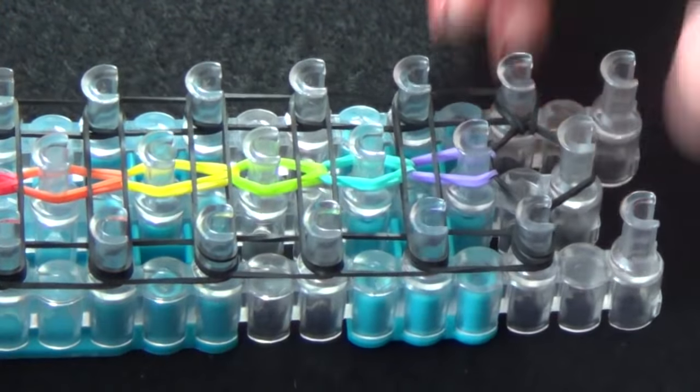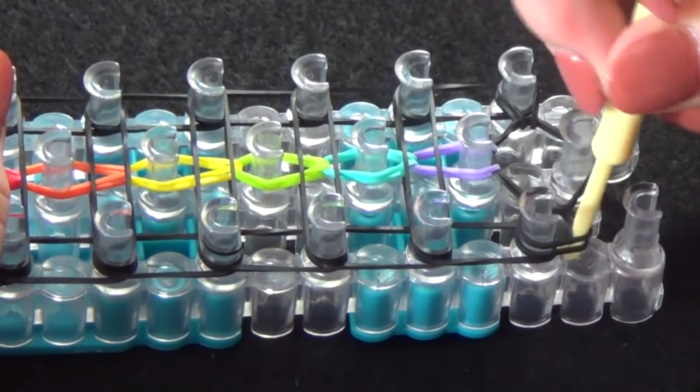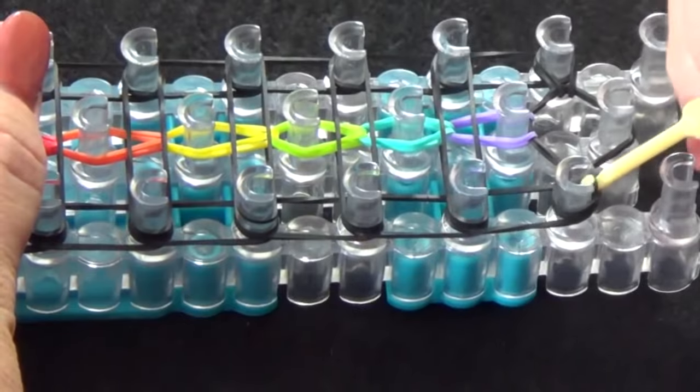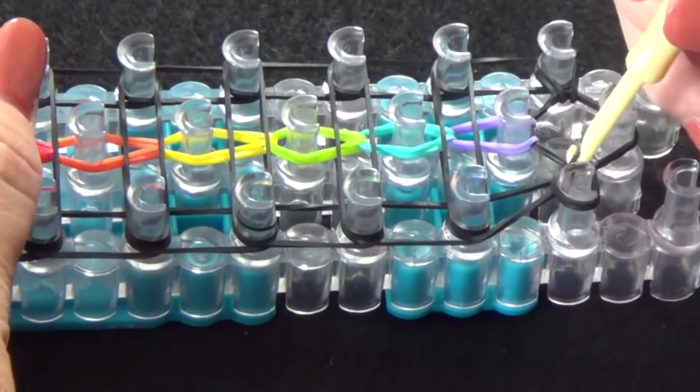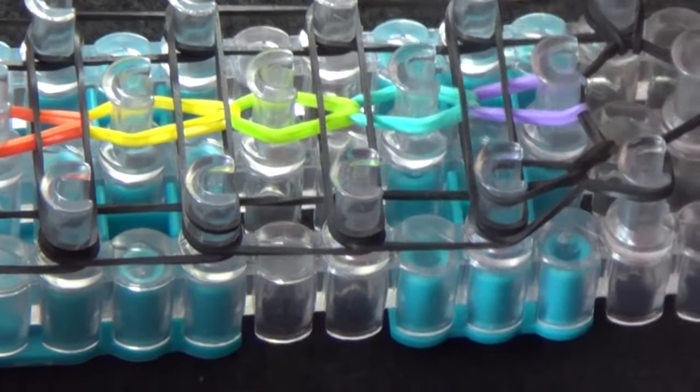We'll loop up this side of the loom first. You'll use the back of your hook to pull these bands back. Slide your hook up through the channel. Lift it over that edge and all the way around. Tilt your hook forward and it should release.